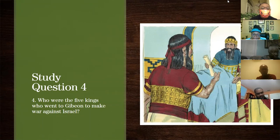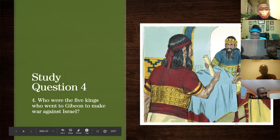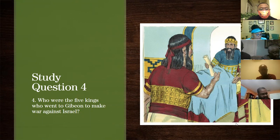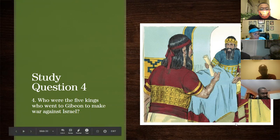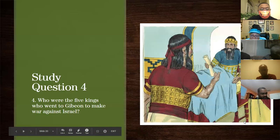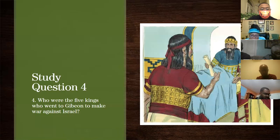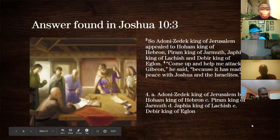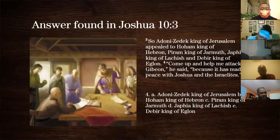Now study question four: who are the five kings who went to Gibeon to make war against Israel? They were Adoni-Zedek of Jerusalem, Hoham of Hebron, Piram of Jarmuth, Japhia of Lachish, and Debir of Eglon. Found in Joshua 10:3. And remember, the 'Adonai' in Adoni-Zedek doesn't mean God — it's more of a title, like a duke or lord.